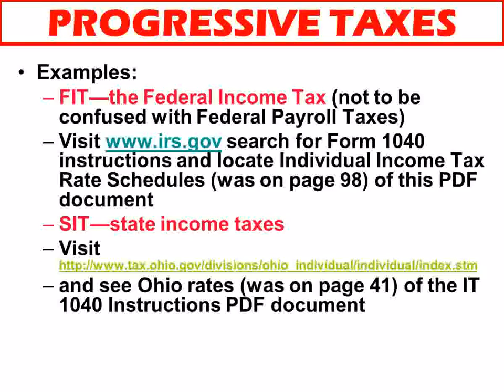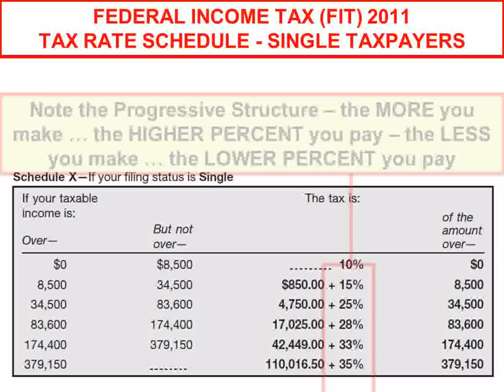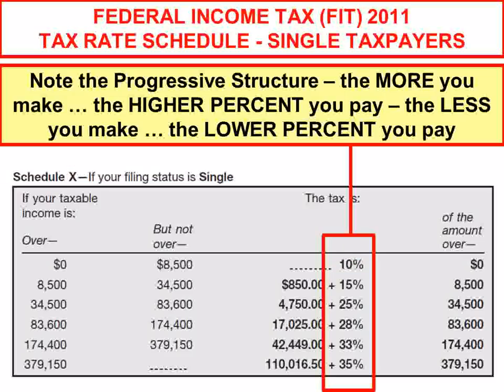Then we move on to some examples of the three types of taxes: progressive, regressive, and flat. The federal income tax is the poster child for progressive taxes. I show the tax rate schedule and explain: if you see a tax rate schedule with multiple levels, multiple brackets, multiple steps — where at high income you pay higher rates — that's what a progressive tax is.